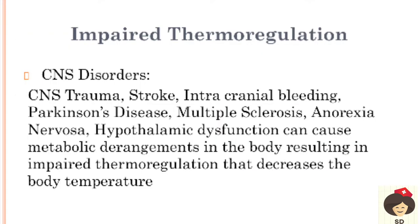Hypothermia can also be caused due to impaired thermoregulation. This can occur due to CNS disorders like trauma, stroke, intracranial bleeding, Parkinson's disease, multiple sclerosis - where the nerves become sclerotic like hard tissue - anorexia nervosa, where the patient doesn't feel like eating, and hypothalamic dysfunction. The brain is mainly responsible for maintaining heat regulation by adjusting the temperature set point. When these diseases are present, there will be metabolic rearrangements and decreased thermoregulation, resulting in decreased body temperature.